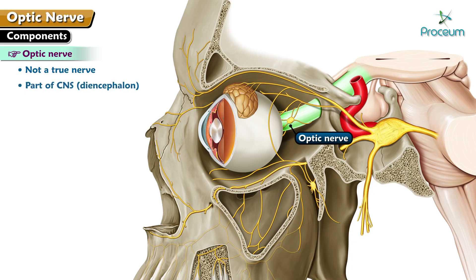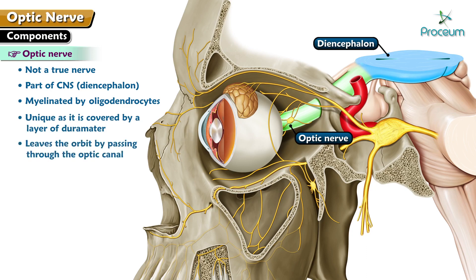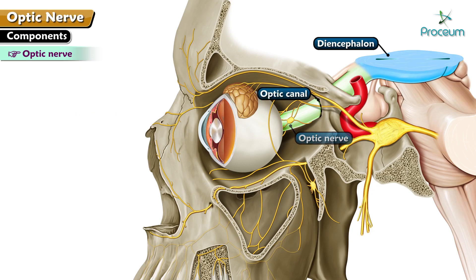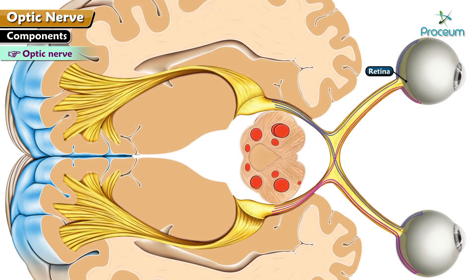The optic nerve is not a true nerve and is actually a part of the central nervous system — the diencephalon — which is myelinated by oligodendrocytes. The optic nerve is unique as it is covered by a layer of dura mater and leaves the orbit by passing through the optic canal. The components of the optic nerve are special somatic afferent fibers for vision, which arise from the retina.